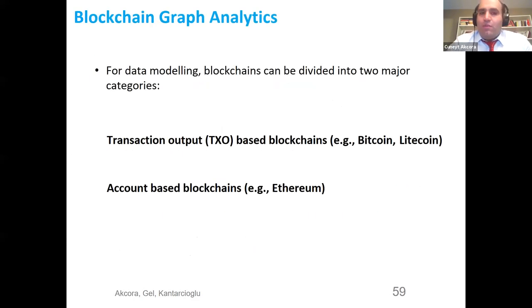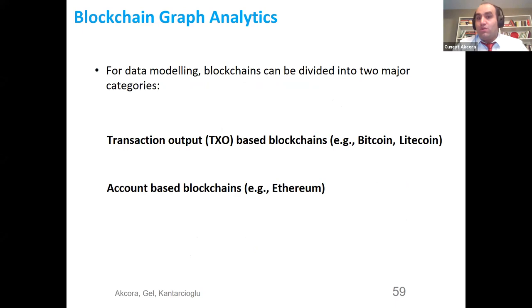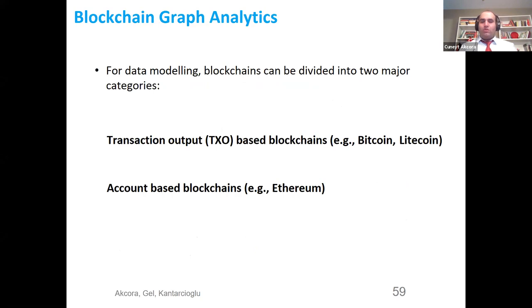For data modeling, blockchains can be divided into two major categories. The first and earliest category was the transaction output based blockchains — these are cryptocurrencies such as Bitcoin, Litecoin, and later Monero. The second type are called account blockchains, which started to become more prominent after 2015. These days, blockchain platforms are account-based, and Ethereum, for example, sees a lot of activity and has kind of taken over in popularity.